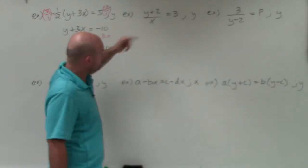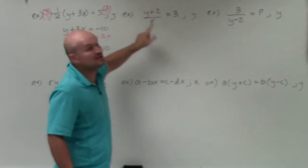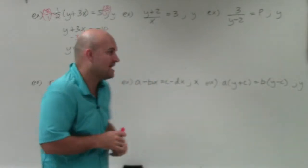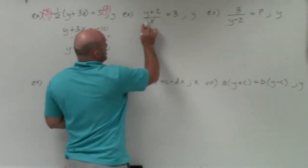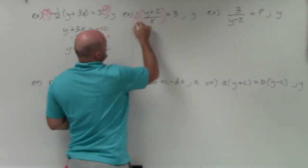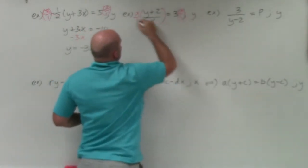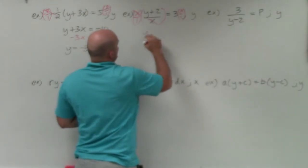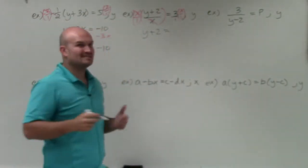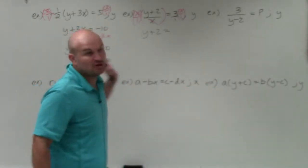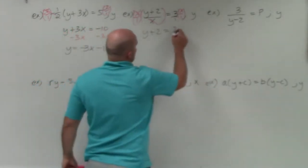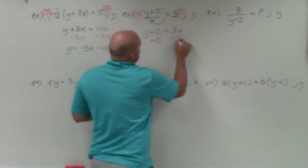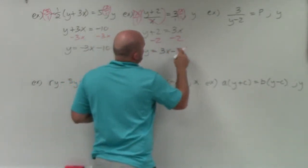In this example, we're solving for y, but y is being divided by x, and 2 is also being divided by x. So I want to get rid of dividing by x — that's creating a rational expression. To undo dividing by x, I'm going to multiply by x over 1 on both sides. Multiplying and dividing by x cancels to 1, leaving y plus 2 equals 3x. Then to undo adding 2, I subtract 2, giving y equals 3x minus 2.